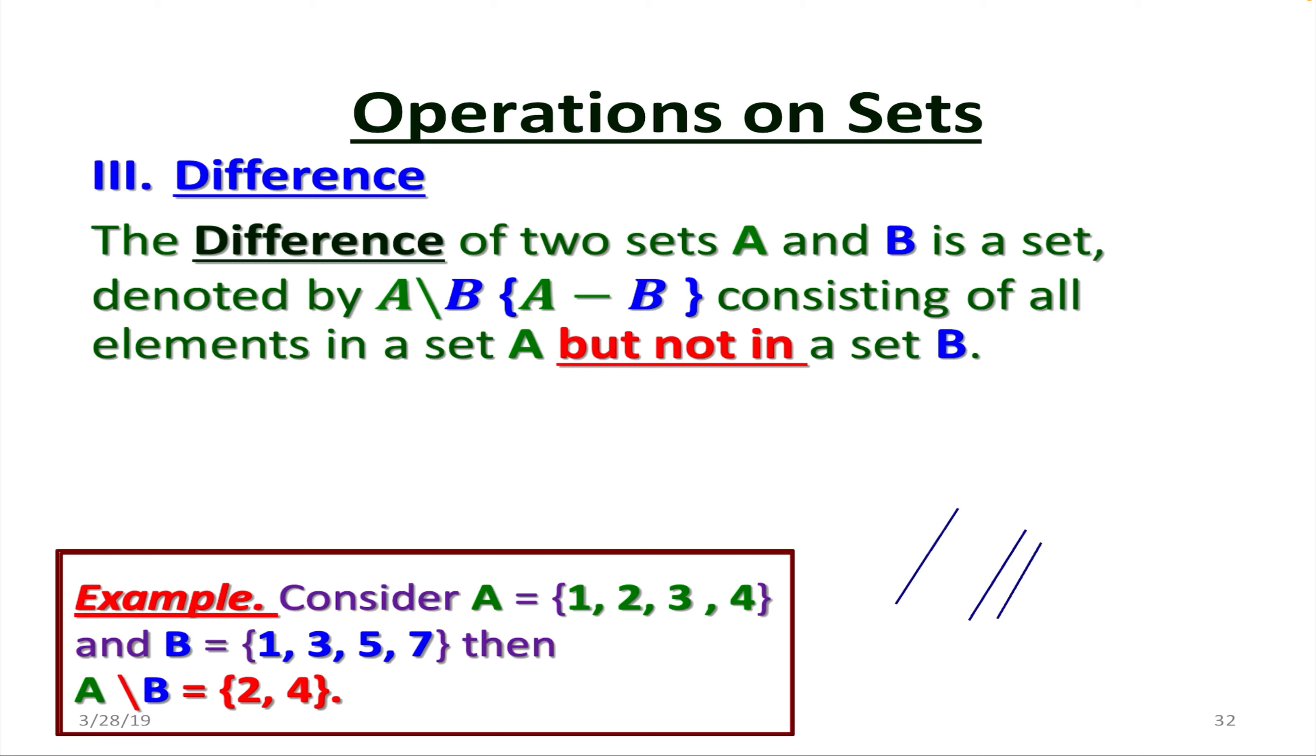Now the third one is going to be difference of two sets. So the difference of two sets A and B is a set denoted by A backslash or A minus B consisting of all elements in set A but not in set B.